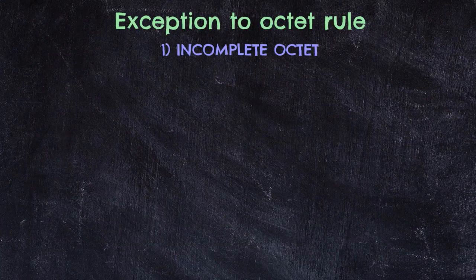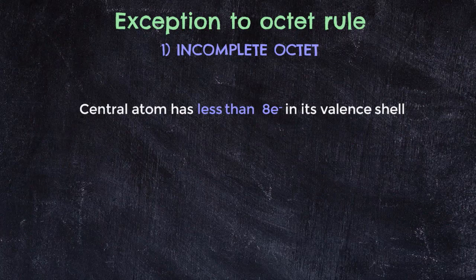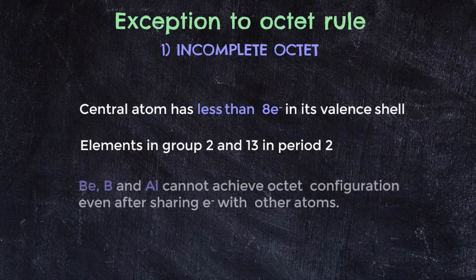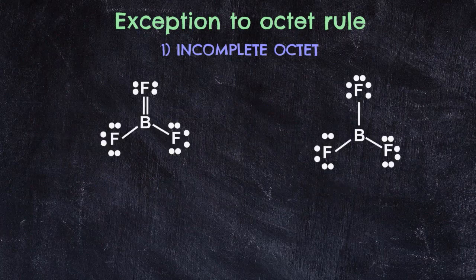If all elements were restricted to obey the octet rule — which works primarily for period 2 elements — it would cause problems for elements in other periods. There are three exceptions to the octet rule. The first is incomplete octet, where the central atom achieves stability by having fewer than 8 electrons in its valence shell. The elements eligible for incomplete octet are in groups 2 and 13, specifically beryllium, boron, and aluminium. For BF₃, one structure has B surrounded by 8 electrons (four covalent bonds), while another has B surrounded by only 6 electrons (three covalent bonds).